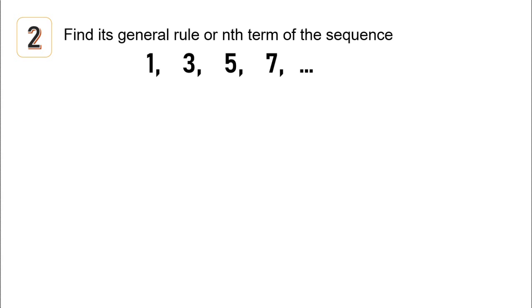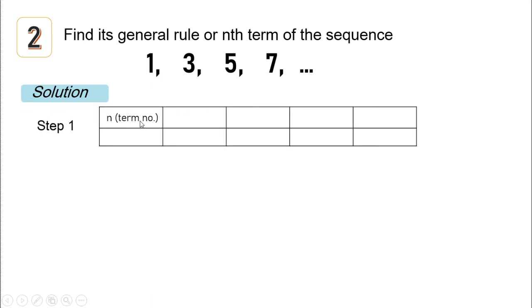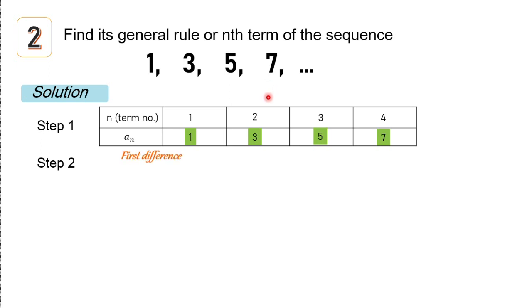Let's have another example: find the general rule or nth term of the sequence 1, 3, 5, 7. Observe that the terms in this sequence are odd numbers. Let's draw another table with n (the term number) and a-sub-n. First term is 1, second term is 3, third term is 5, and the fourth term is 7. For step two, the difference between 1 and 3 is 2; 3 and 5 is 2; and 5 and 7 is 2.